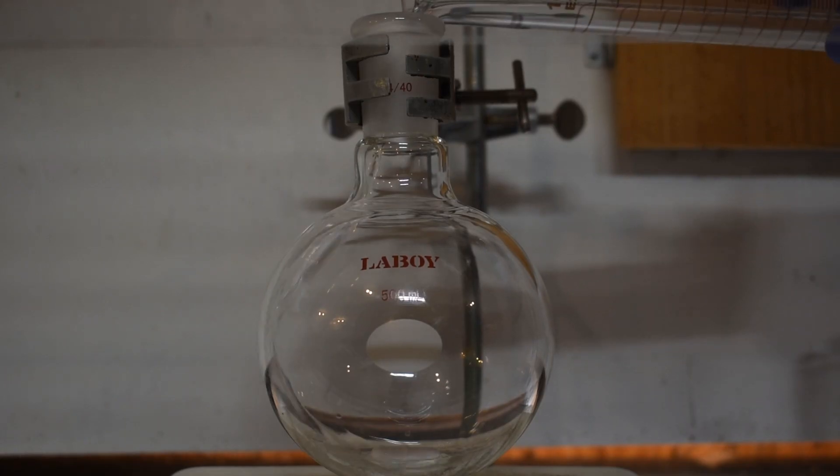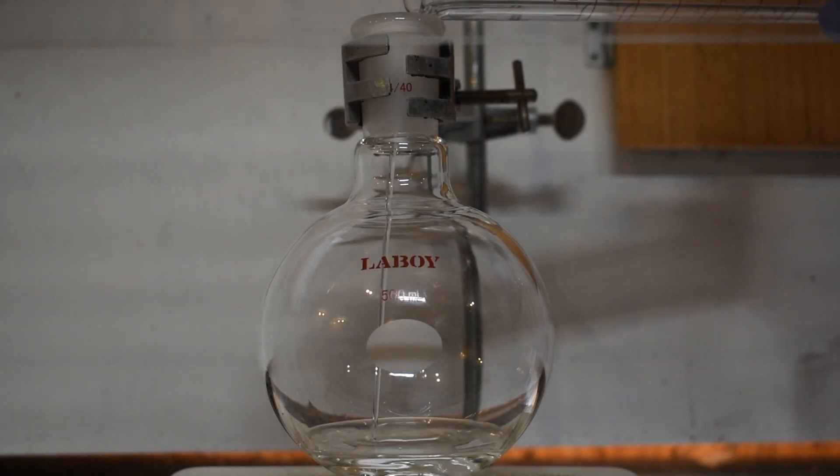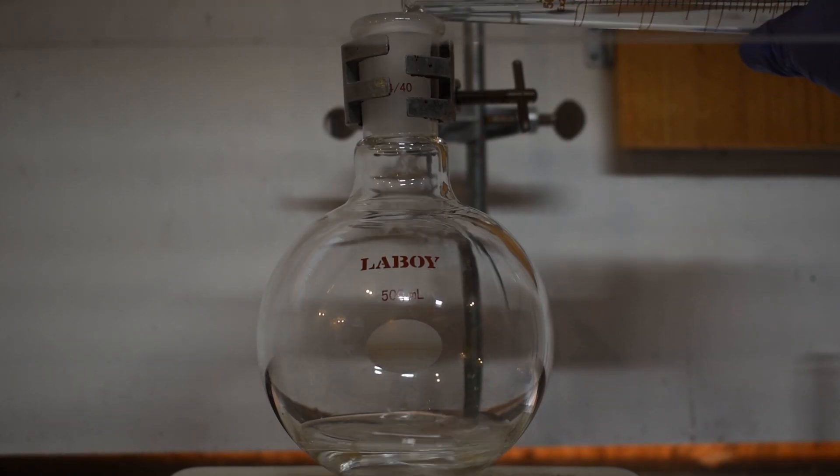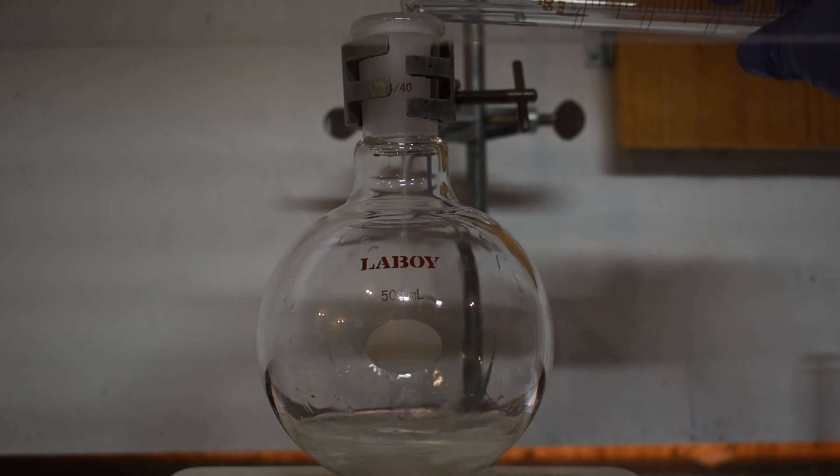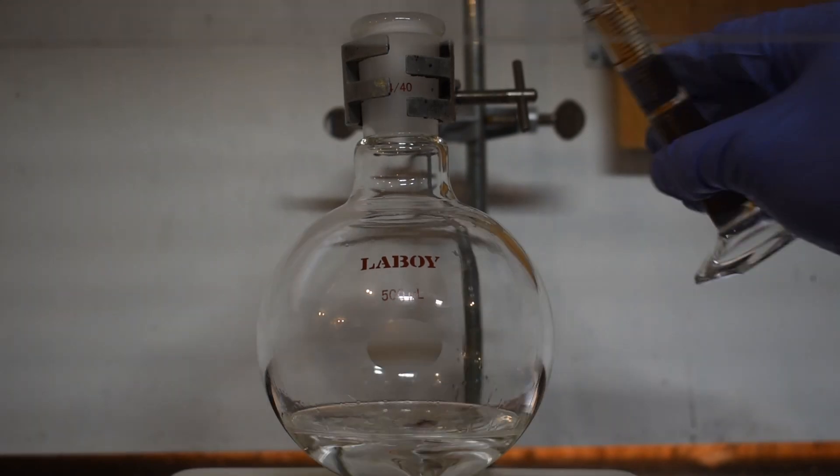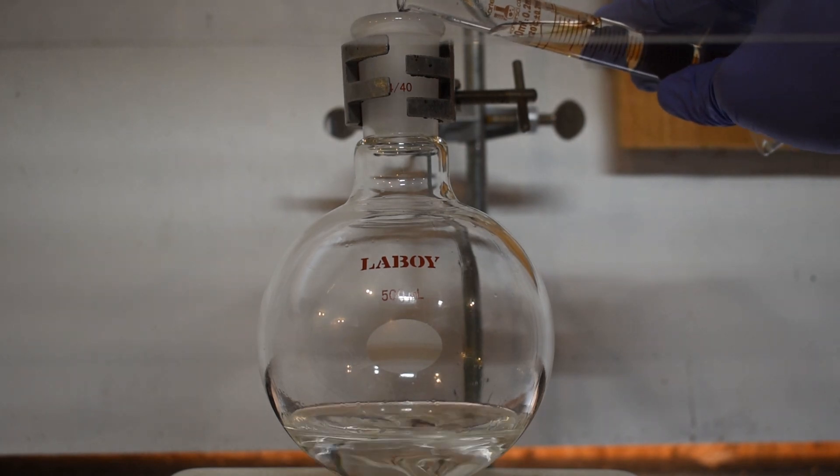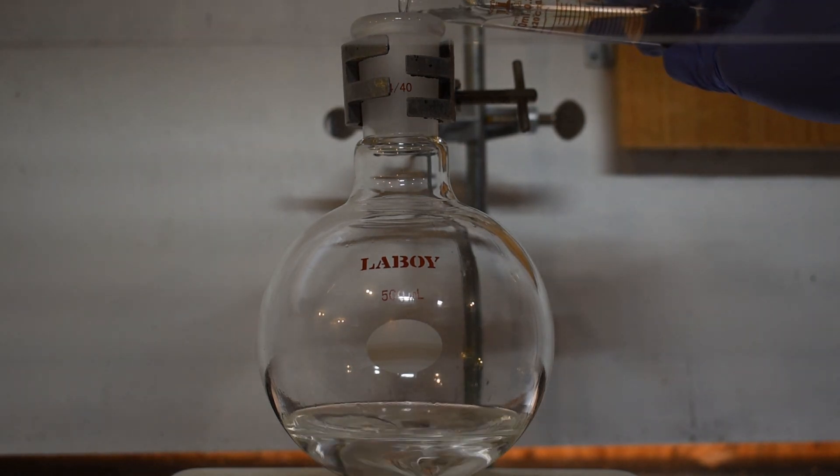To a 500 milliliter flask, I first added the isoamyl alcohol, and then on top of that, I added my glacial acetic acid. Finally, I slowly added my sulfuric acid to prevent the mixture from getting too hot.